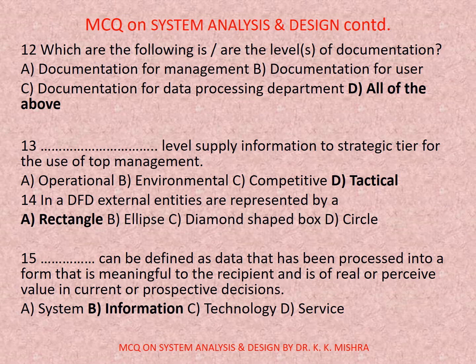Question number thirteen: Dash level supplies information to the strategy tier for the use of top management. Options are: a) operational, b) environmental, c) competitive, d) tactical. Correct option is d) tactical.